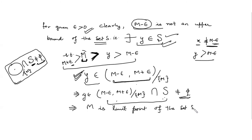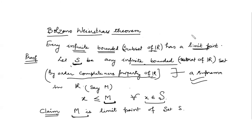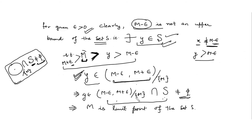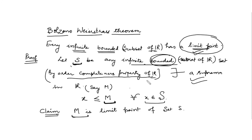This implies that capital M is the limit point of the set S. So whenever we have an infinite bounded subset of R, there always exists a limit point. Moreover, the supremum and the infimum are both limit points for the set S. Since the set is bounded, it is bounded below also, so there must exist an infimum in R. You can take the same case with the infimum and prove it is also a limit point of set S. So we get at least one limit point in the case of a bounded set.